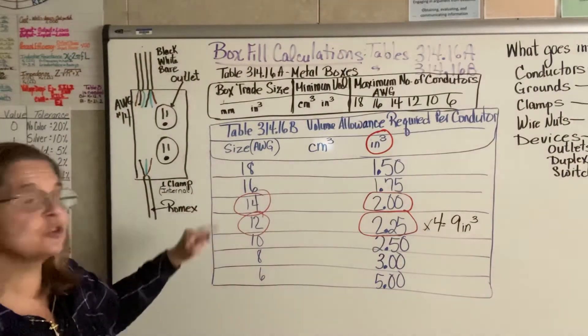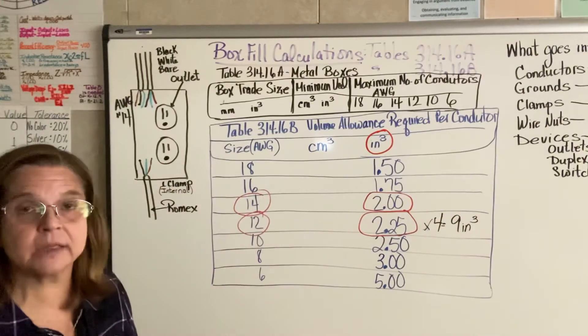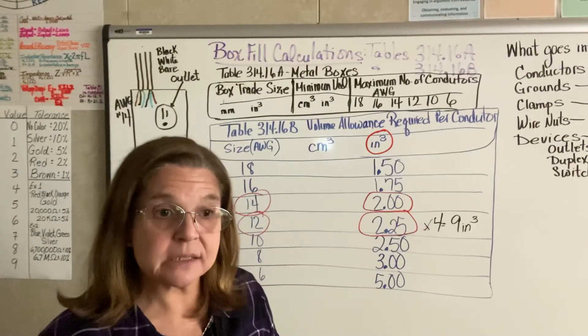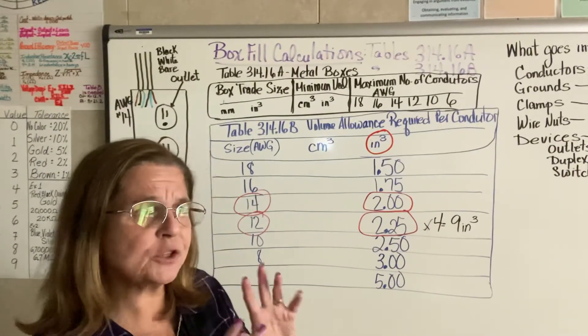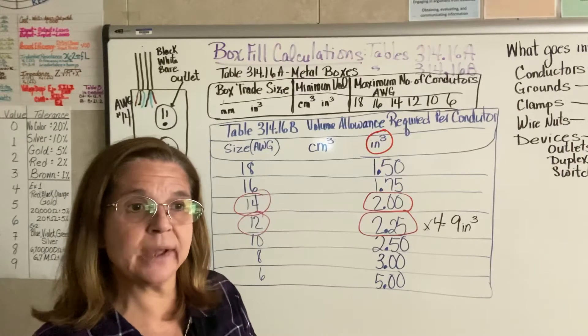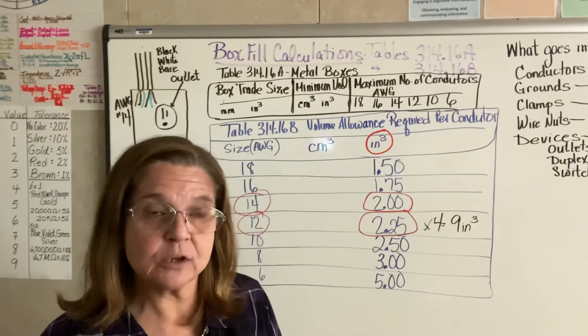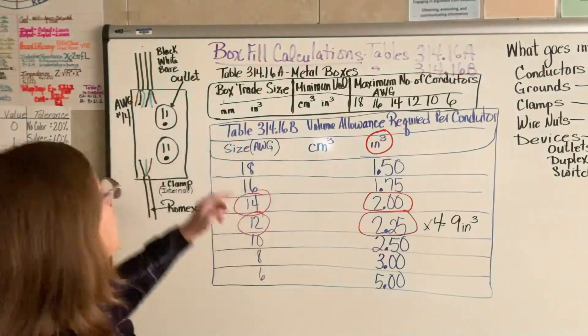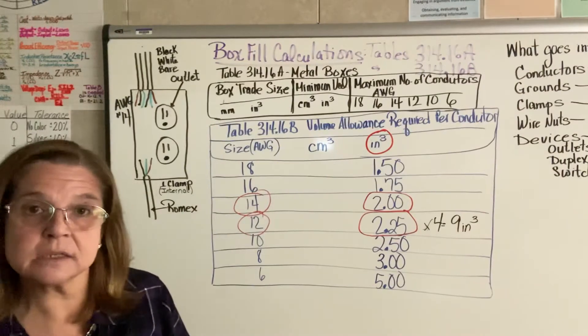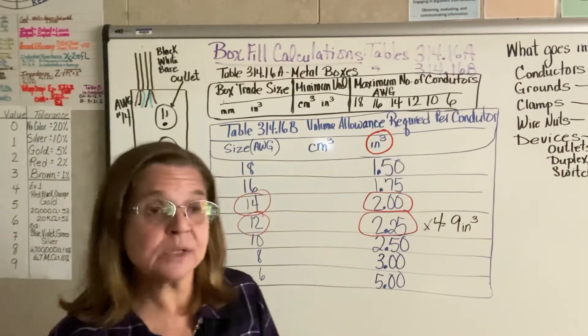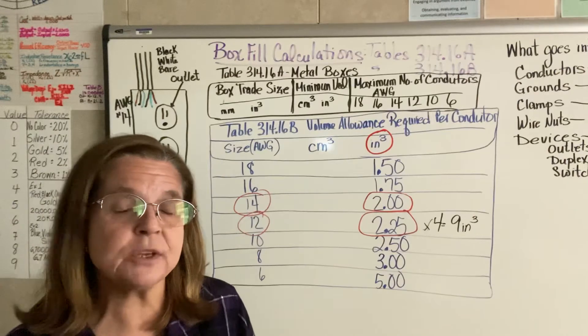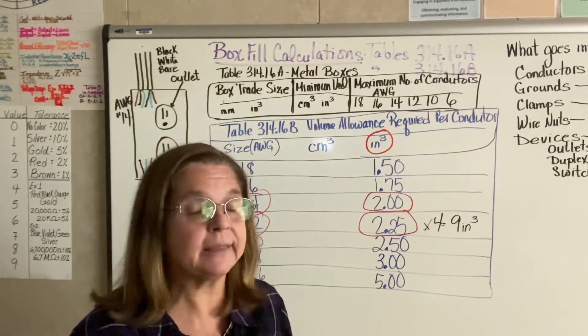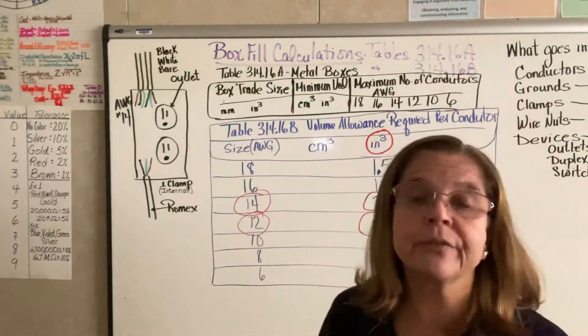And now I need to know what size box can I use to put everything inside where the wires are not overcrowded. Because if they're overcrowded, we can end up causing damage to the coverings on the conductors. And if it's too tight, we can cause overheating. So we need to be sure that our calculations make sense, that they work, and they fit the NEC code.